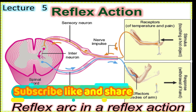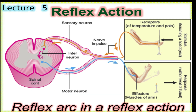Voluntary actions are under conscious control and the brain controls them. But if the impulses are not passed through the brain, the response is not under conscious control. Some involuntary actions originate from the central nervous system but they are very fast, and this fast response is called reflex action.